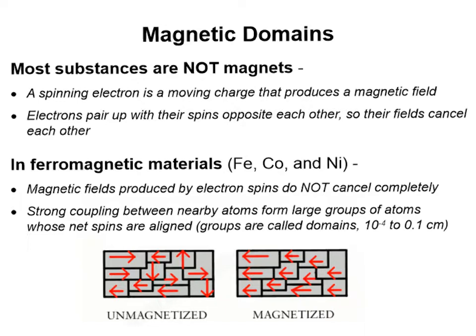When we talk about most substances, most substances have electrons in their atoms that are pairing up with their spins opposite each other, and so their fields cancel each other out. So most substances are not magnets.